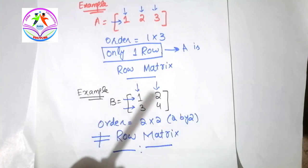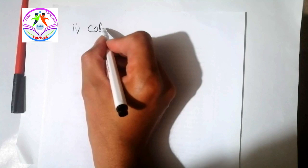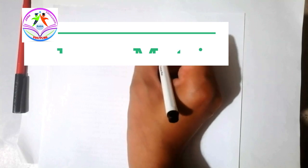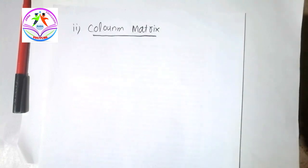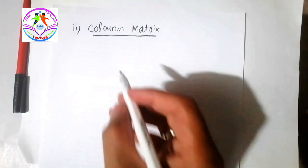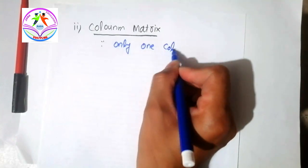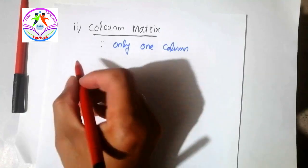Now let's move to another type, which is called column matrix. The second type is column matrix. A column matrix is defined as: the matrix which has only one column is called a column matrix.